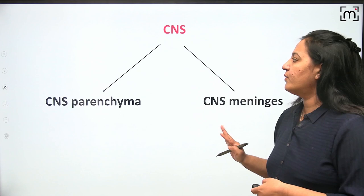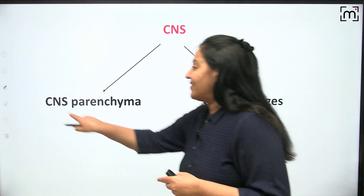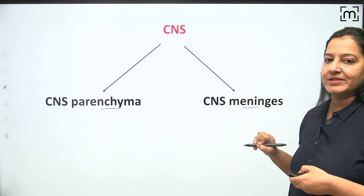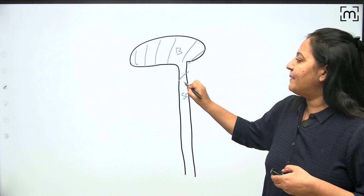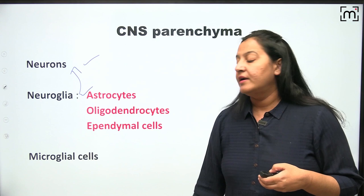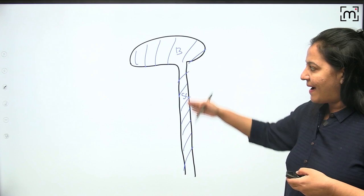Now let's talk about meningitis. In the central nervous system we have the brain and spinal cord. The CNS is made up of two things: the parenchyma and the meninges. The parenchyma is the actual component made up of cells — neurons, neuroglia (supporting cells), and microglial cells, which are macrophages.